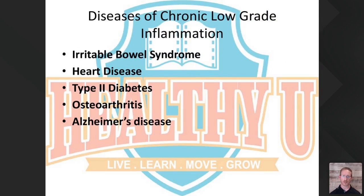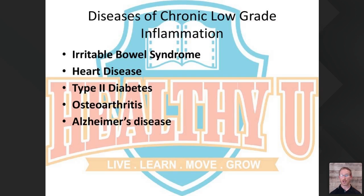Common diseases like irritable bowel, heart disease, type 2 diabetes, osteoarthritis, and Alzheimer's all come from the same inflammatory roots. A lot of current Alzheimer's research is pointing to what they call a central neuropathy — similar to how diabetes can cause peripheral neuropathy, losing nerve function in the extremities. Alzheimer's appears to be the same process happening in the brain, driven by undetected type 2 diabetes attacking the brain's nerves. Research shows that people with Alzheimer's who eat anti-inflammatory diets see improvements in cognitive function.